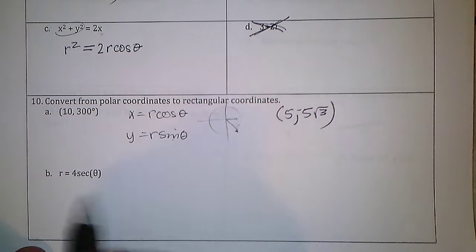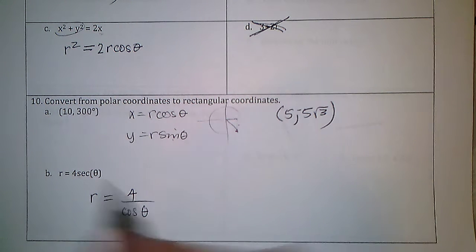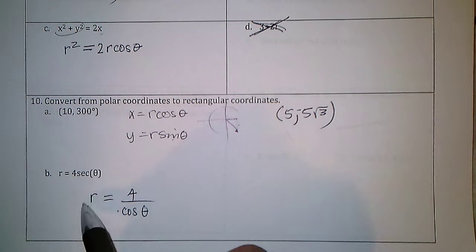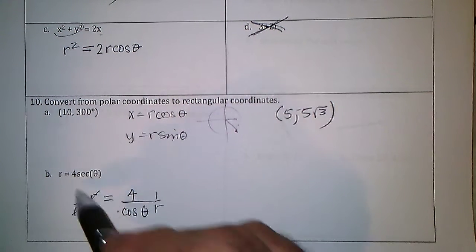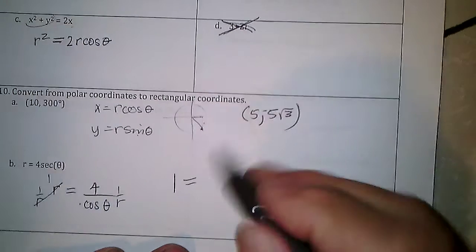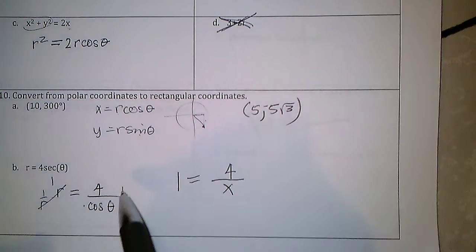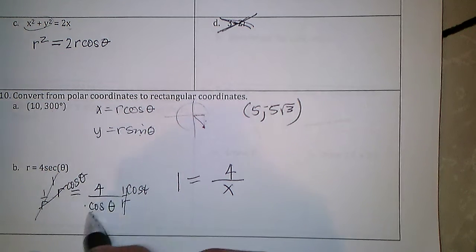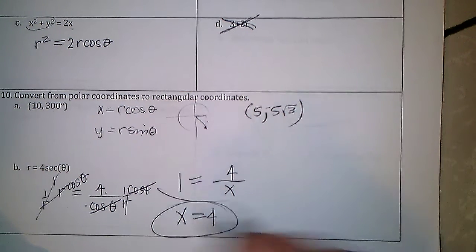For r = 4·sec(θ): secant is 1 over cosine, so r = 4/cos(θ). I can multiply both sides by cos(θ), which cancels it on the right, giving r·cos(θ) = 4. Since r·cos(θ) = x, this gives x = 4. This and the other approach are the same.